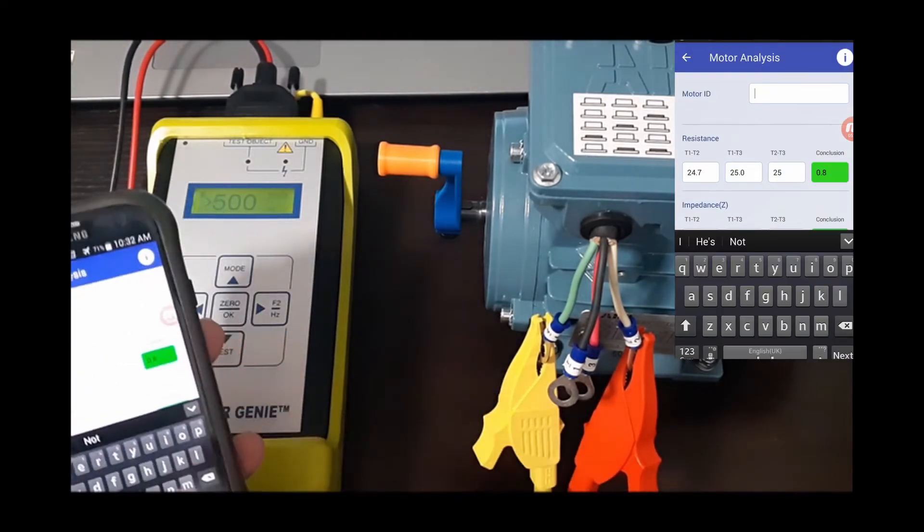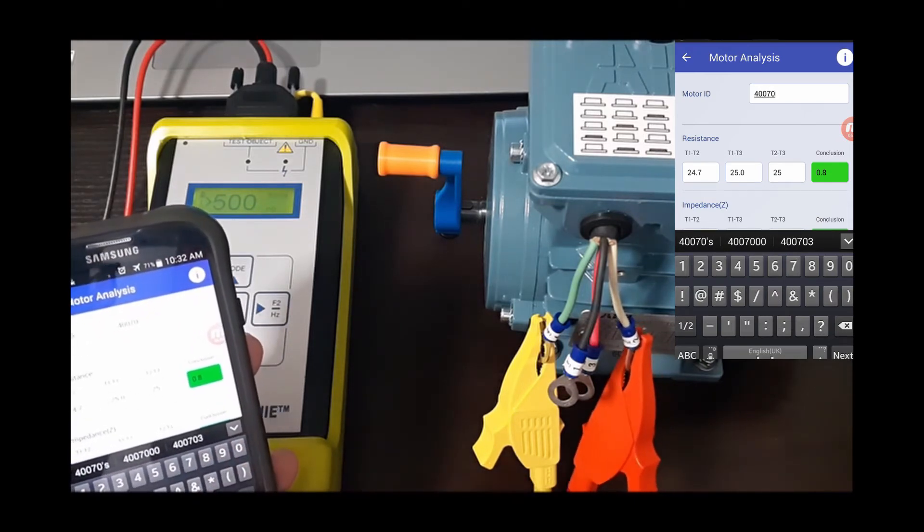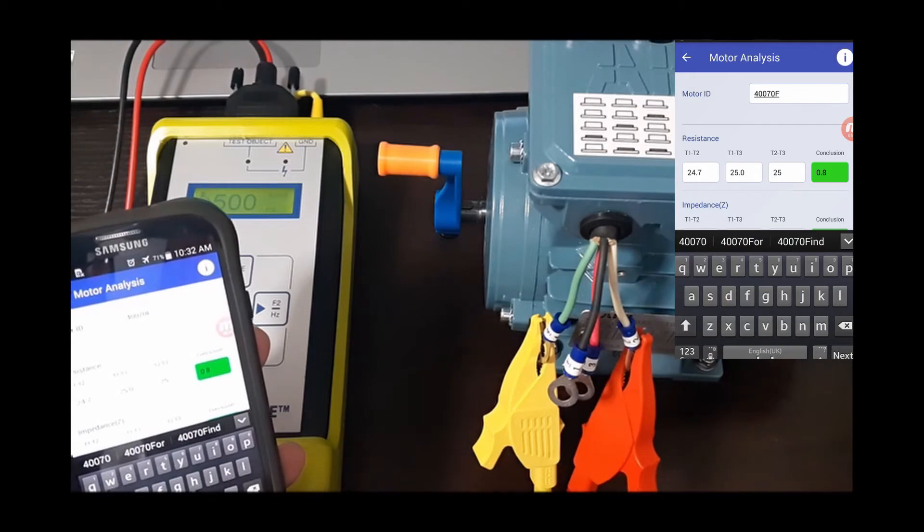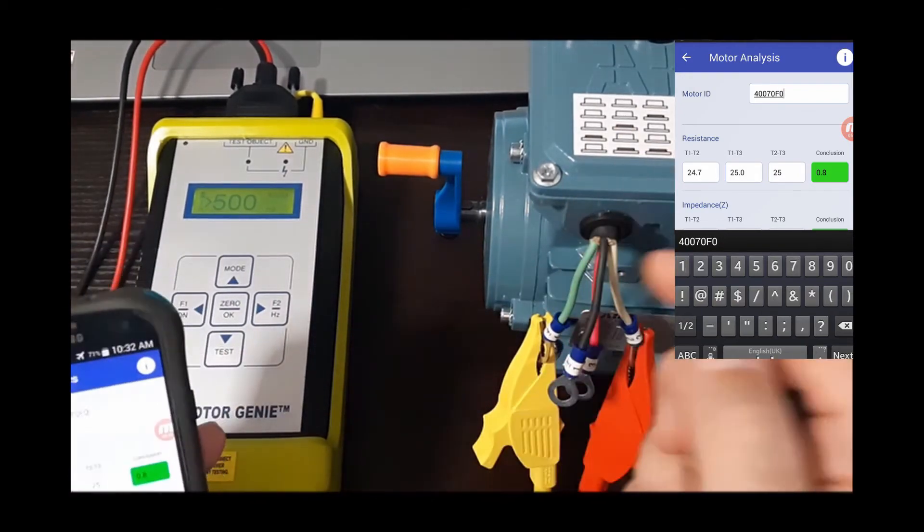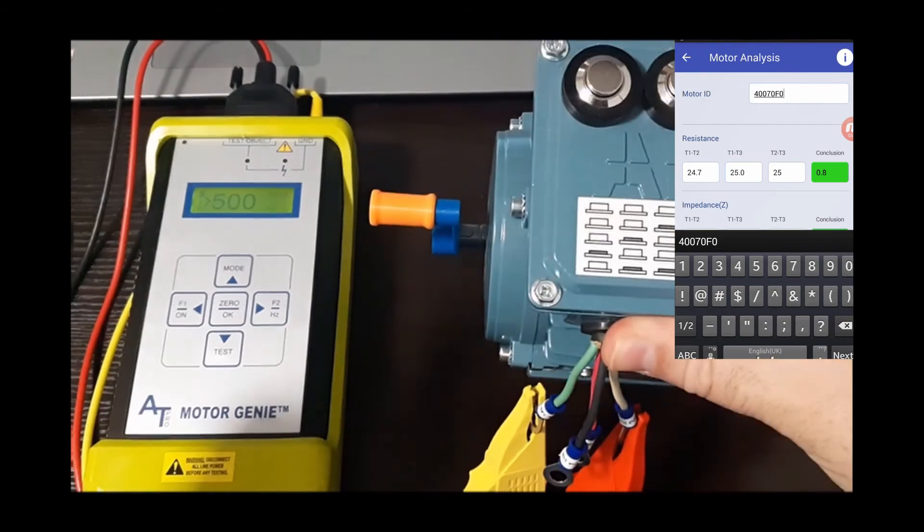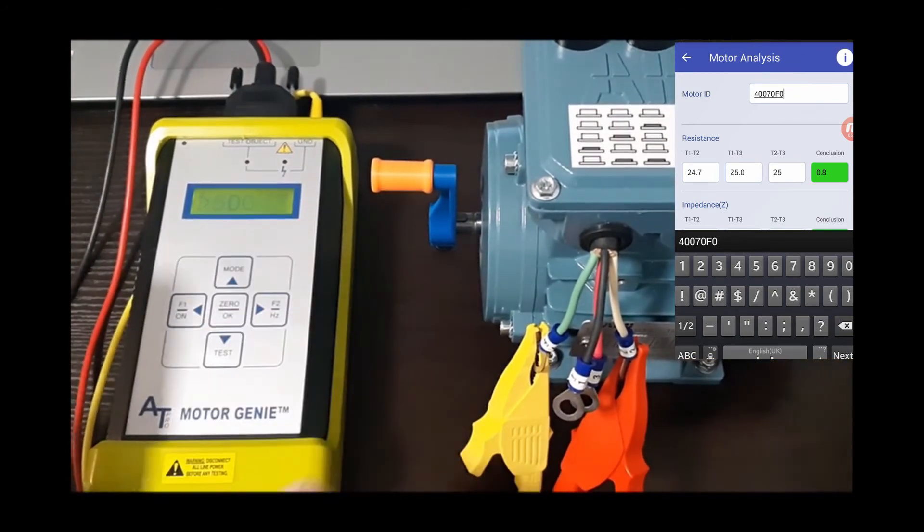One thing I forgot to mention earlier is you need to put in what your test frequency is, so that was 200 there and everything is showing fine here. I'll quickly name my motor. I'm putting in the part number and zero faults because this is a switchable fault motor we can use it to test what faults look like on here.